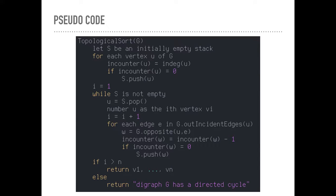So a topological sort just accepts a graph G. So first we're going to let S be an initially empty stack. For every vertex U in the graph, we're going to set inCounter(u) equal to indeg(u), the number of edges that are coming in, the in-degree of U.